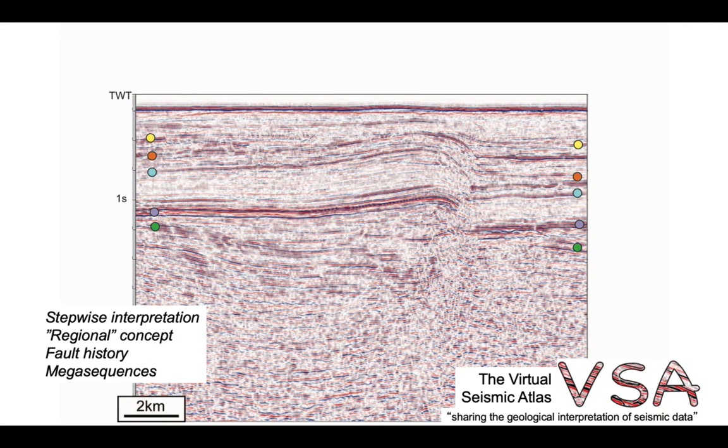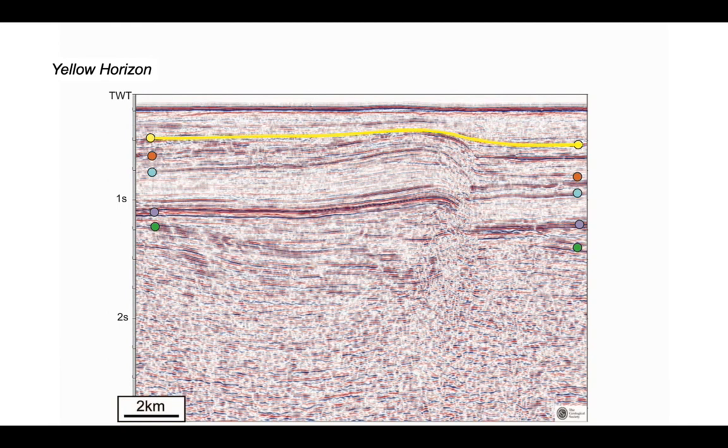So you can see we've picked out five horizons that we can trace out through this profile. Here's the yellow horizon at the top, running from right to left, gently bulged up across a structure. And this particular horizon appears to be continuous.